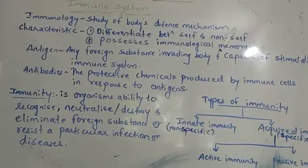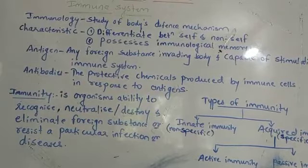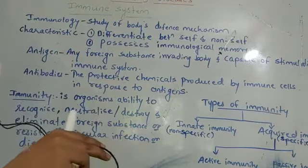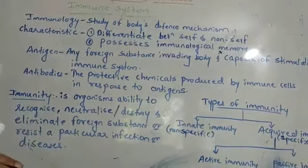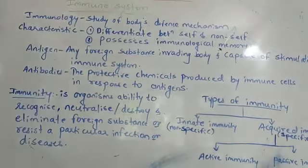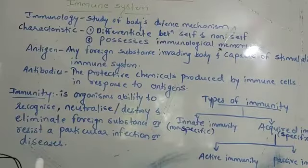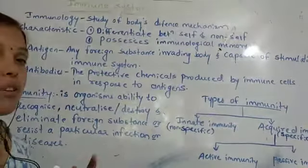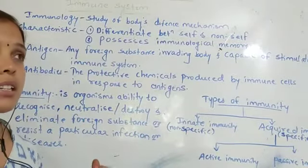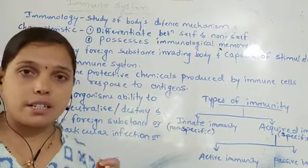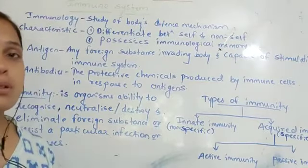We have seen the concept of diseases — viral diseases, bacterial diseases, fungal diseases, protozoan diseases, and helminthic diseases. Bacterial diseases include typhoid and pneumonia, ringworm is a fungal disease, protozoan diseases include amoebosis and malaria, and helminthic diseases include ascaris and filaria.